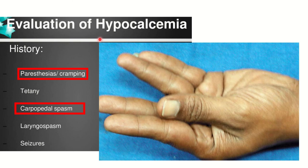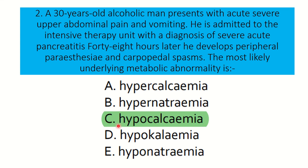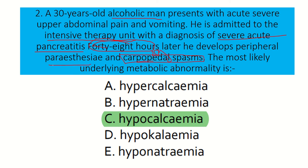So paresthesia and carpopedal spasm are very important features that develop due to hypocalcemia, and hypocalcemia is one of the complications of acute pancreatitis. In this case, the alcoholic person was in the intensive care unit, diagnosed with severe acute pancreatitis, and after 48 hours — that is, within the first seven days — developed peripheral paresthesia and carpopedal spasm.